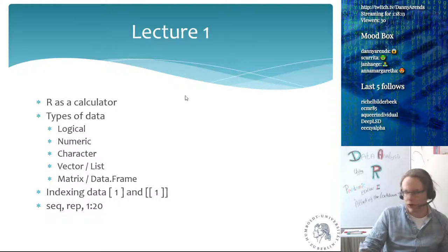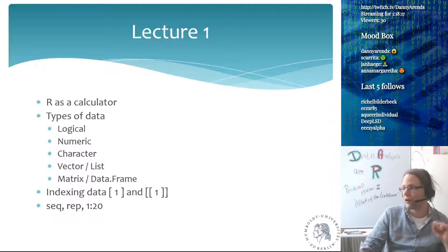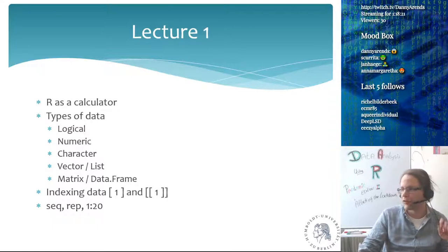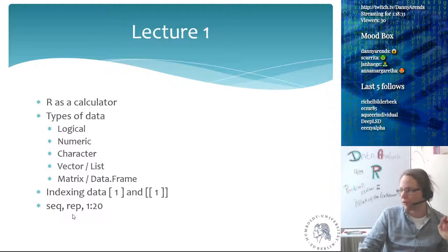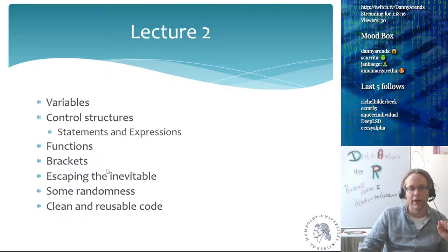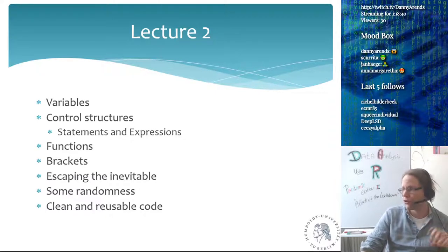A quick reminder of lecture one: we used R as a calculator, talked about data types — logical, numeric, character. Indexing works for all types using single square brackets, except for lists which need double square brackets. The seq function, repeat function, the 1:20 double-point operator. In lecture two we talked about variables, control structures, functions, and different brackets. For if statements, for loops, or functions, always use curly brackets — it's much clearer for anyone reading your code.